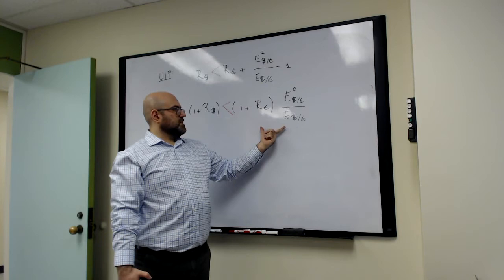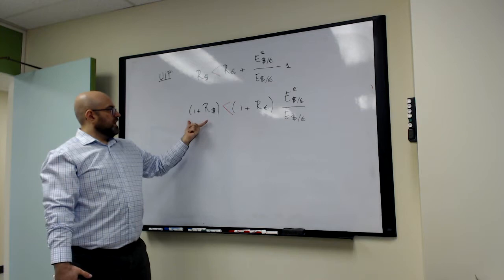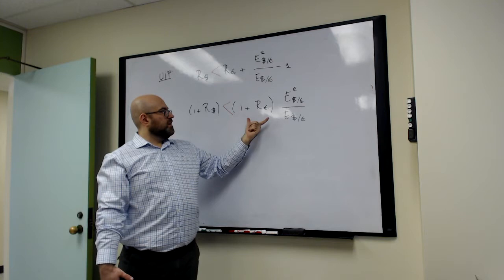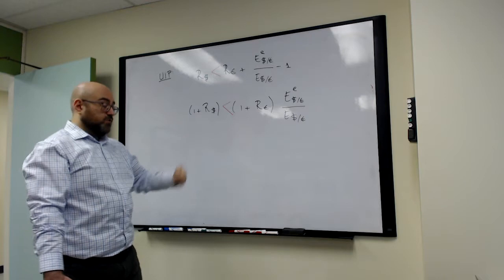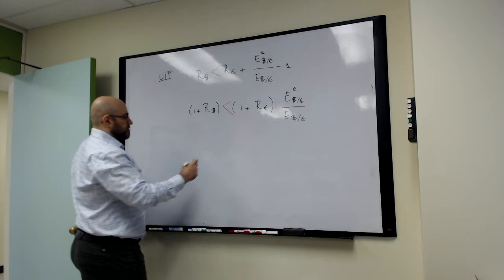So interest rates are low in the US and the relevant return is high in Europe. So we will be taking a loan in the US and then buying euros with that loan and depositing that amount in Europe. And then in one year's time, we're going to bring it back by buying dollars.